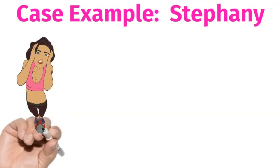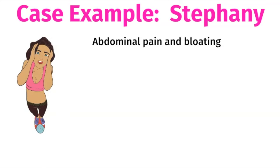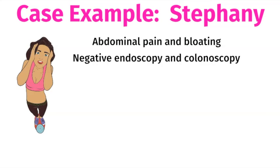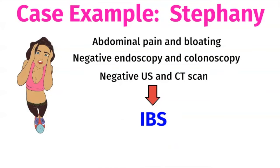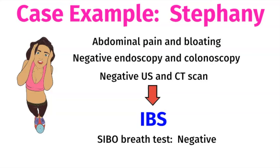Let me give you a case example. Stephanie was a 35-year-old woman suffering with abdominal pain and bloating. Her gastroenterologist did an endoscopy and colonoscopy, which were negative, and she also had a negative abdominal ultrasound and CT scan. So Stephanie was told that she has IBS, or irritable bowel syndrome, and she just has to manage her symptoms. This was a frustrating diagnosis. When Stephanie came to see me, I thought for sure she had SIBO, but surprisingly, her SIBO breath test came back negative.